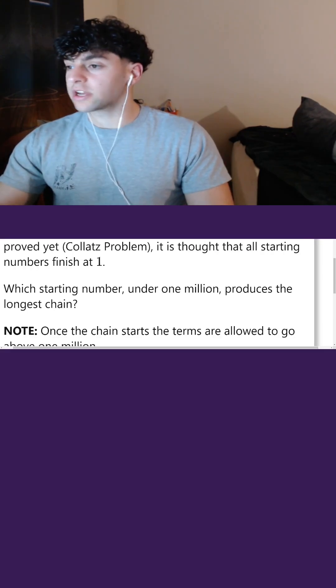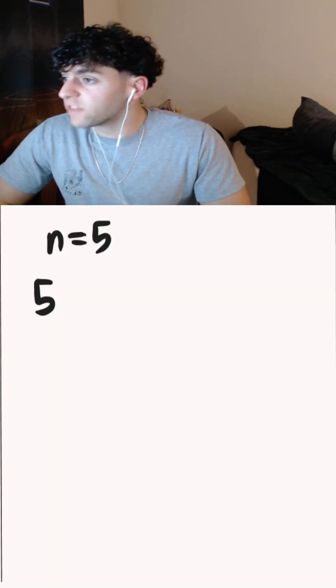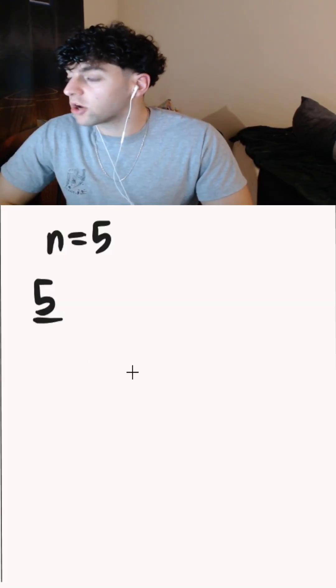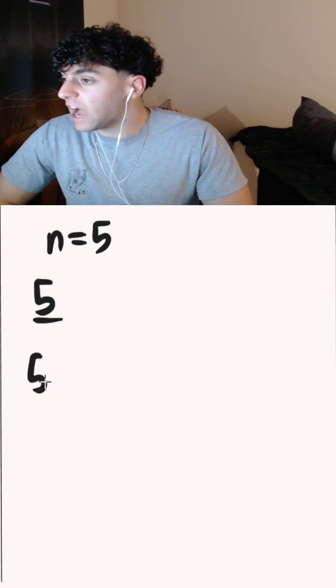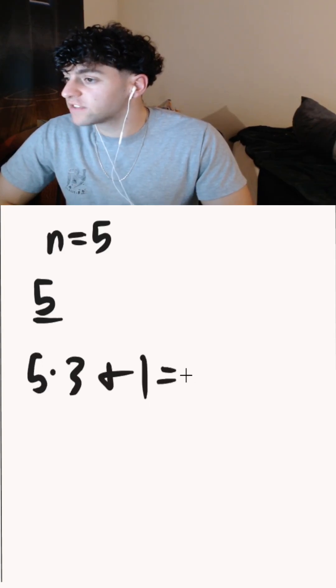And we have to find a starting number under 1 million that produces the longest chain. Let's start with 5 as an example. 5 is going to be our starting number in the chain. And since 5 is odd, we're going to do 5 times 3 plus 1, which gives us 16.